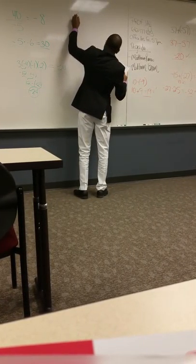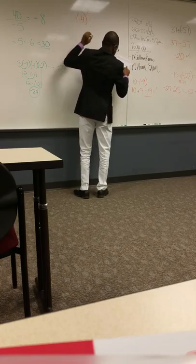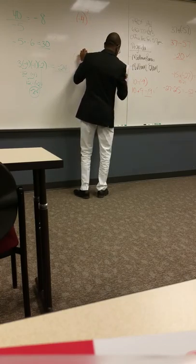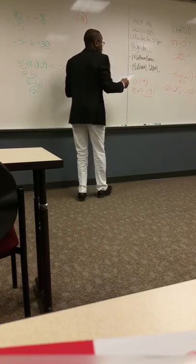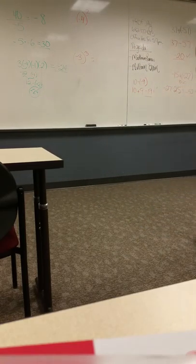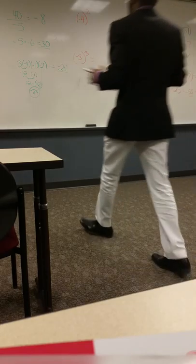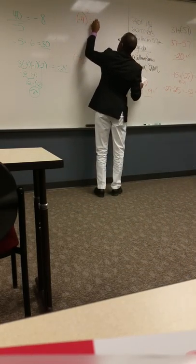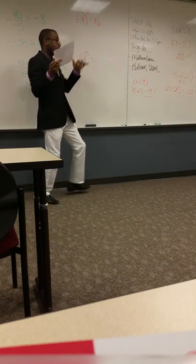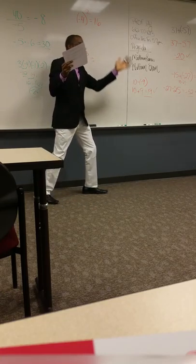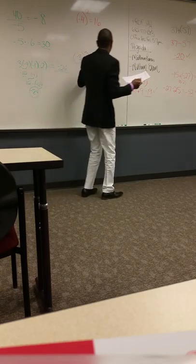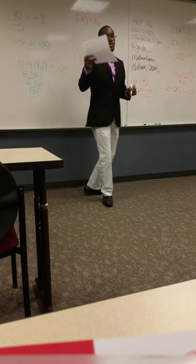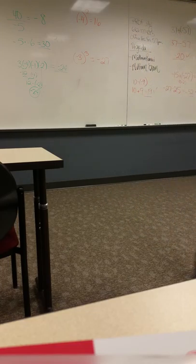So negative 4 squared: this is like negative 4 times negative 4, and negative times a negative is a positive, so that's positive 16. Then negative 3 cubed: negative times negative is positive, times negative is a negative. The answer is negative 27.